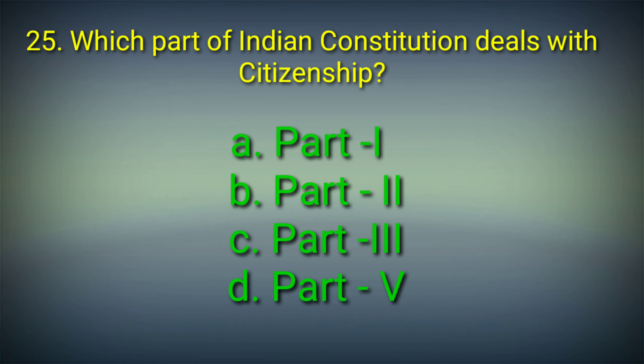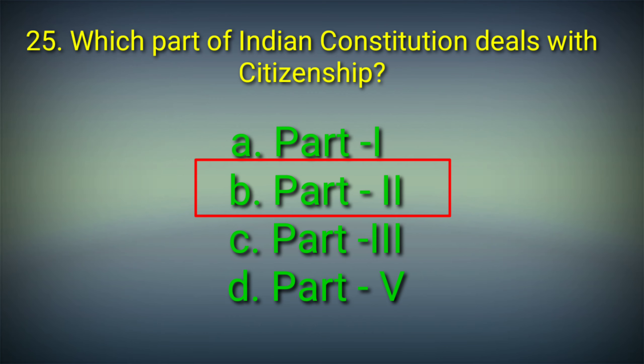25th question: Which part of the Indian Constitution deals with citizenship? Options: A. Part 1, B. Part 2, C. Part 3, D. Part 5. Answer: Option B. Part 2 of the Indian Constitution deals with citizenship.